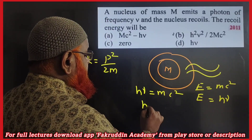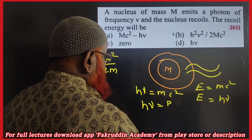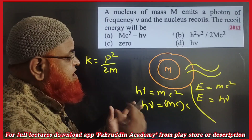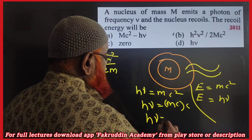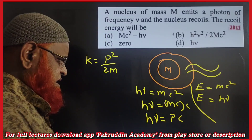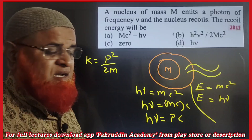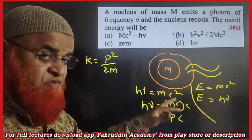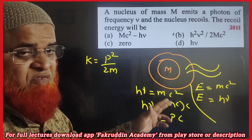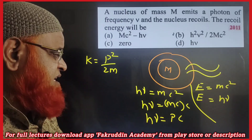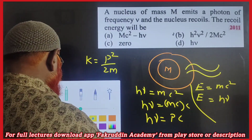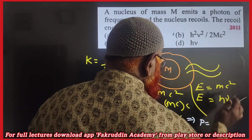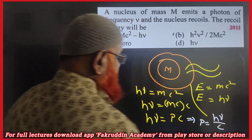We can write hν = mc² as hν = mc × c. Since mass times velocity is momentum, mc = p, so hν = pc. This gives us p = hν / c.